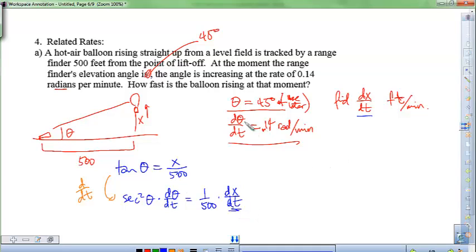We have d theta dt, and we have theta to be 45 degrees, so I think we're all set. We can just put in all those values and we can solve for dx/dt. Let's solve for dx/dt right here, because it looks like it's easy enough to multiply both sides by 500.